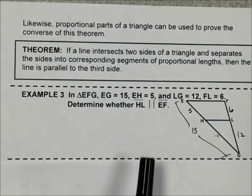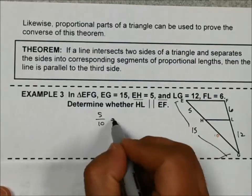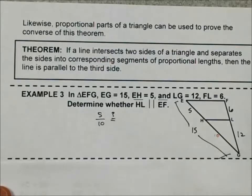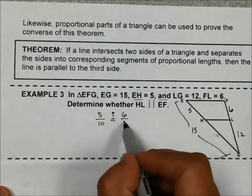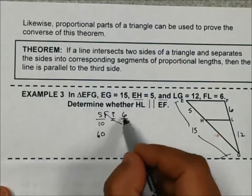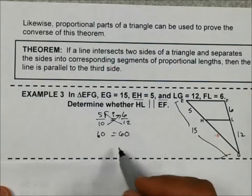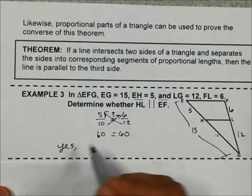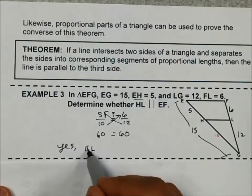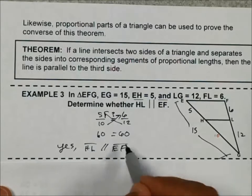So that's what I'm going to use to set up my proportions. I'm going to go 5 over 10, and I want to see is that equal to 6 over 12. Cross products, 5 times 12 is 60, 10 times 6 is also 60. They are equal, so then I would say yes, HL is parallel to segment EF.